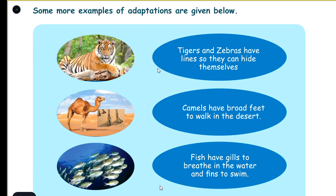Some more examples of adaptations are given below. Tigers and zebras have stripes so they can hide themselves.